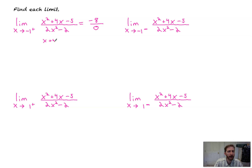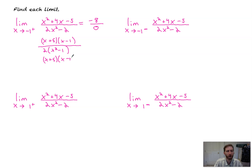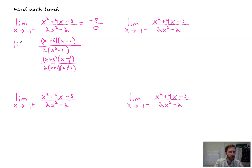So I'm going to factor this thing out. We've got x plus five all over x minus one, divided by two times x squared minus one. And that's going to factor out a little bit nicer still: x plus five times x minus one, all over two times x plus one times x minus one. We can take these two factors out, and we're going to keep our limit with us — we don't want to be lazy.